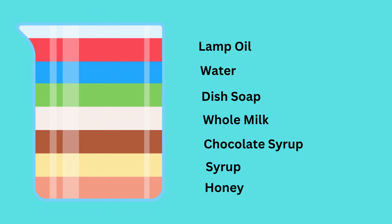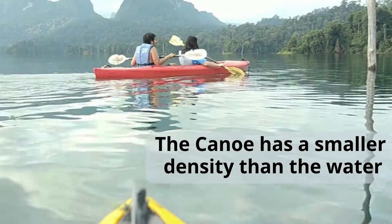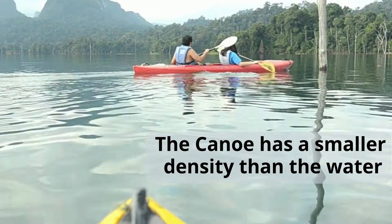If you take a look at this cylinder, it's filled with different liquids. You will notice the most dense liquids will be on the bottom, and the least dense objects will settle on top. This is a rule of density — objects with less density will always settle on top of objects with a greater density.